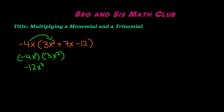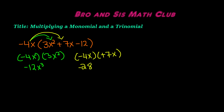Now let's distribute negative 4x to positive 7x. We get negative 4x times positive 7x. Negative 4 times positive 7 is negative 28. And x times x gives you x squared, because you're adding the exponents — x to the power of 1 times x to the power of 1 gives you x squared, or x to the power of 2.